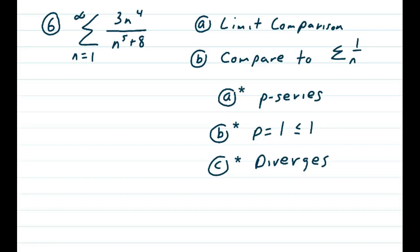Problem 6. Summation n equals 1 to infinity of 3n to the 4th over n to the 5th plus 8.